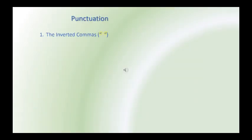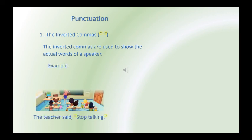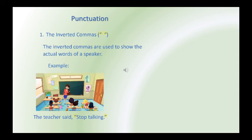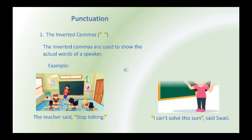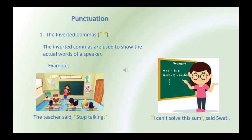The inverted commas. The inverted commas are used to show the actual words of a speaker. Example: The teacher said stop talking. What did the teacher say? Stop talking. Here, by the use of inverted commas, we know the actual words the teacher said. Example 2: I can't solve this sum, said Swati. What did Swati say? I can't solve this sum. We know exactly what Swati said because it is written in inverted commas.